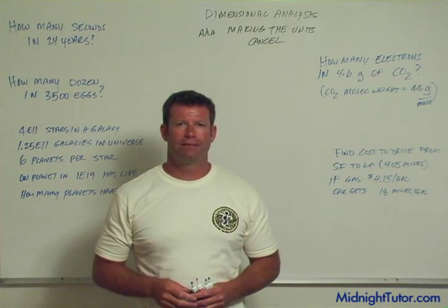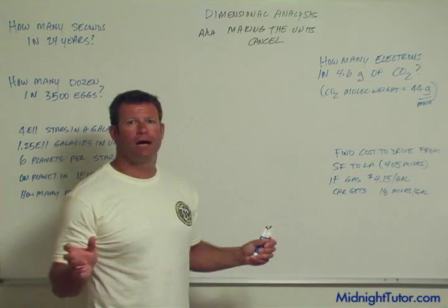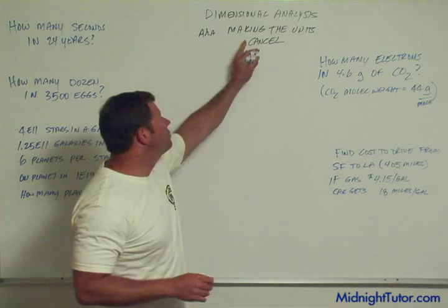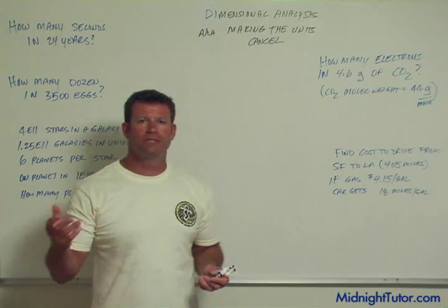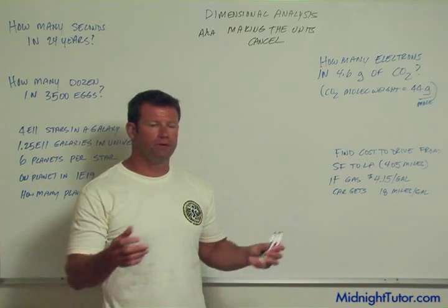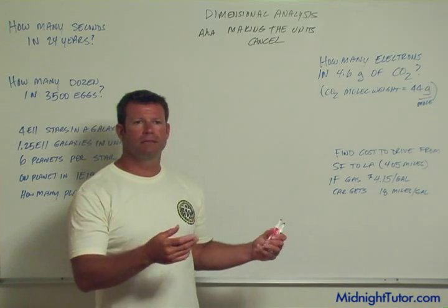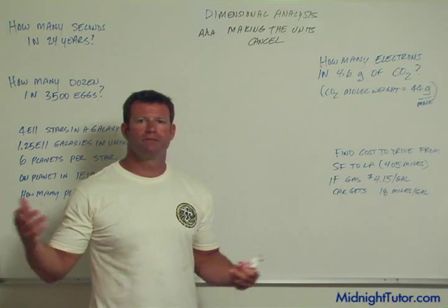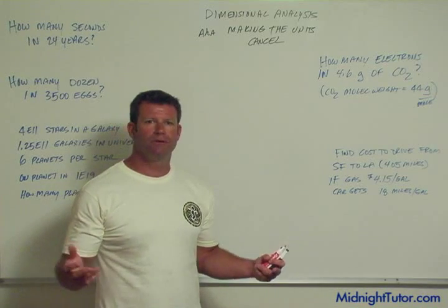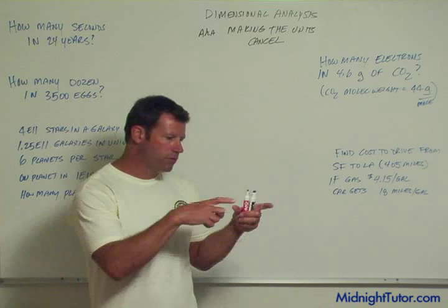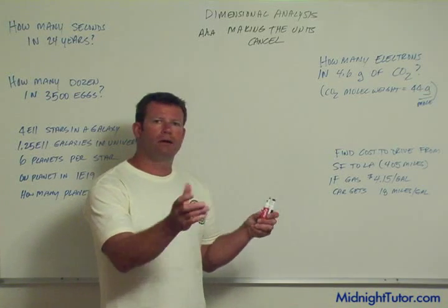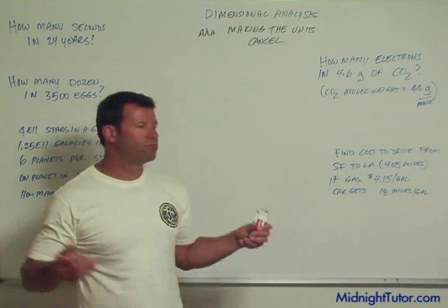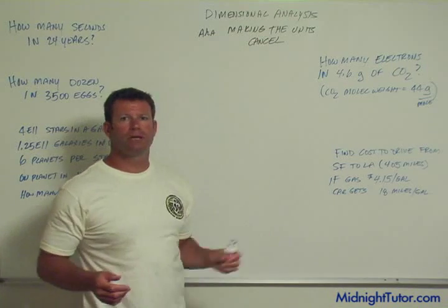Today I'd like to talk about a topic taught in high school chemistry called dimensional analysis. In physics, there's something else actually called dimensional analysis, which involves finding a dimensionless constant to make sure a small-scale experiment matches the performance of a large one — like using a wind tunnel model of a 747 to simulate real airflow. But dimensional analysis in high school chemistry is something else.